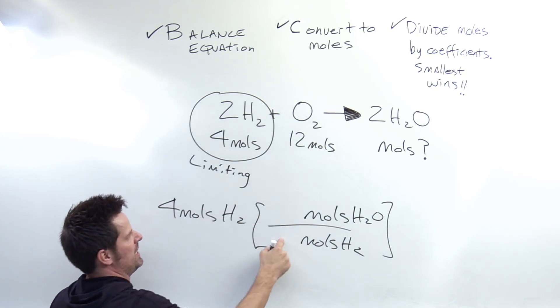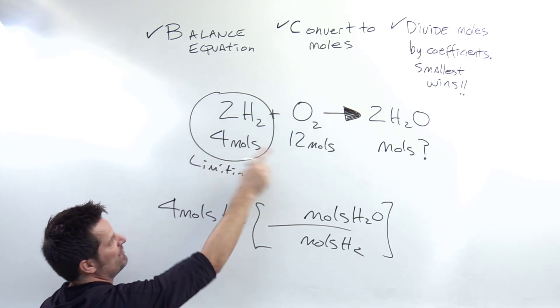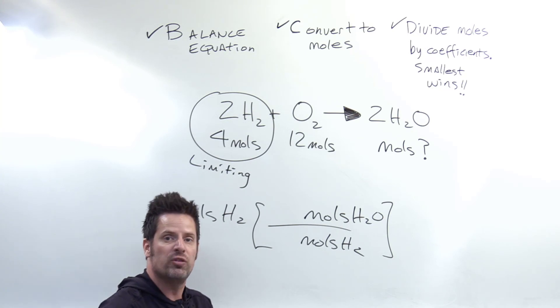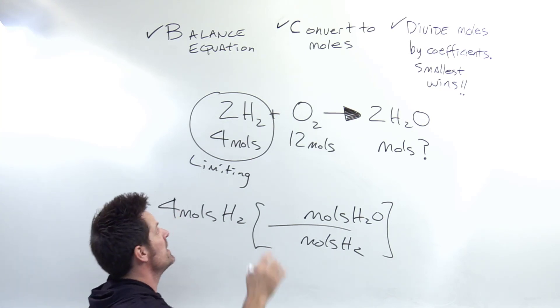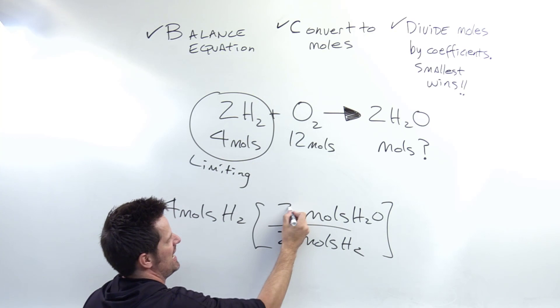But what numbers do I put here? Well, those are the coefficients. Because the coefficients in a balanced equation are the mole to mole or molecule to molecule ratios. I have a two in front of the H2O and I have a two in front of the H2.